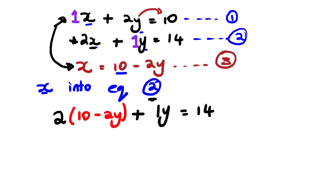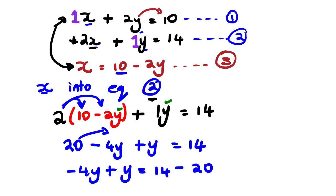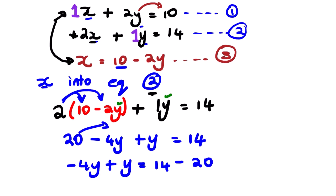The reason for substituting is to get rid of one variable so we are left with only one variable in the equation — in this case only y. We simplify: 2 multiplied by 10 gives 20, and 2 multiplied by negative 2y gives negative 4y, so we have 20 minus 4y plus y equals 14. We then transpose 20 to the other side: negative 4y plus y equals 14 minus 20.